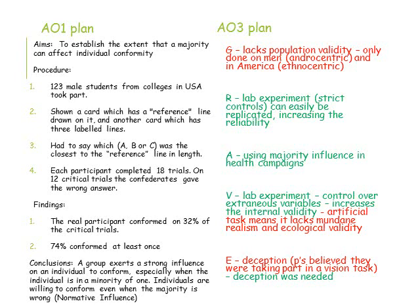I'm going to mention the aims and pick out four key facts: 123 male students were shown a card with a reference line and three other lines; they had to say which of lines A, B, or C was closest to the reference line; they completed 18 trials; and on 12 critical trials, the confederates gave a wrong answer. Key findings: real participants conformed on 32% of critical trials and 74% conformed at least once, suggesting individuals will conform to a majority even when wrong — supporting normative social influence.